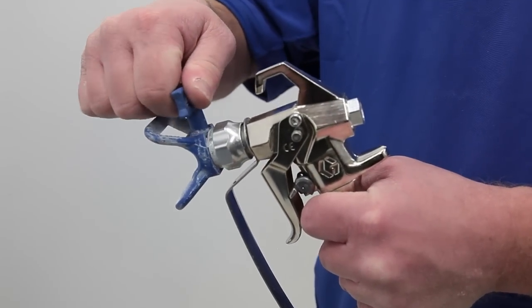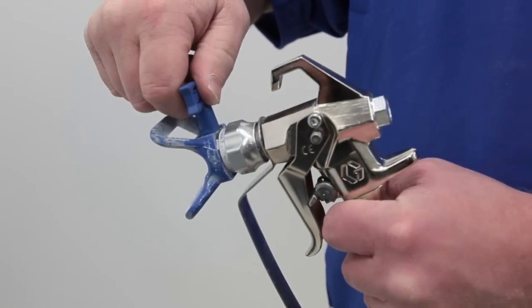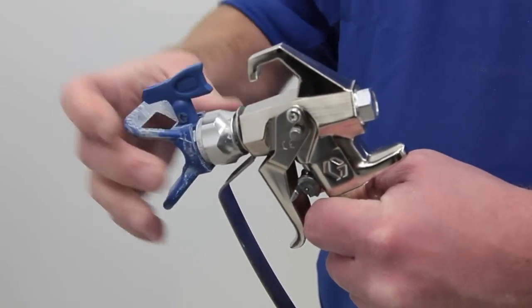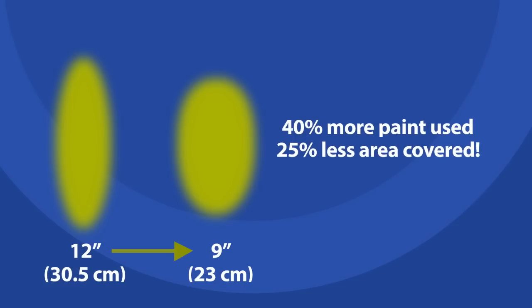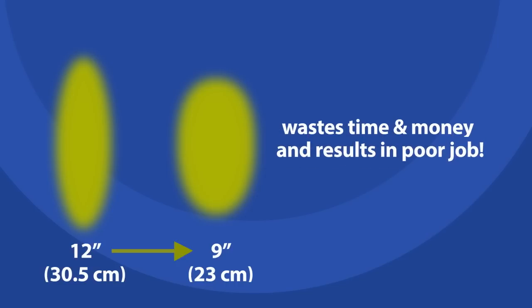Over time, if you notice that your fan width has lost 25% of its original size, it's time to replace the tip. For example, if a tip with a 12 inch fan width has gradually been reduced to 9 inches over time, that worn tip will spray 40% more paint but cover 25% less area. You're wasting a lot of time, money and getting a poor paint job.